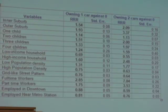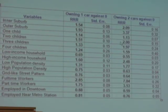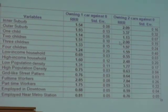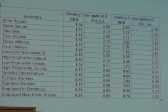Looking at three or four children and the two-cars column, the same trend holds: a household with two children is two times more likely to own two cars rather than no car compared with a household with no children. The trend increases, though not necessarily for three and four children.